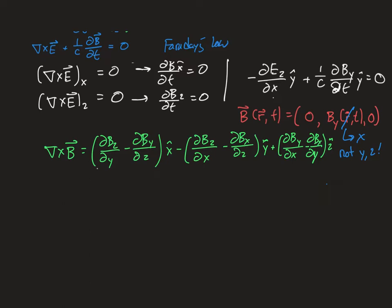We know that B is only in the y direction, so any Bx and Bz terms go away. We also know that in the y direction only the x dependence matters, so the term ∂By/∂z goes away. What we're left with is one remaining term: the derivative of By with respect to x, in the z-hat direction.